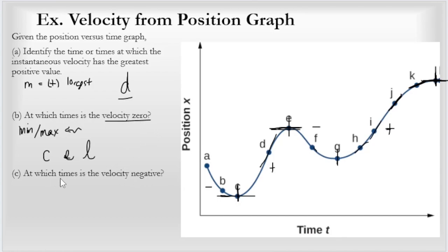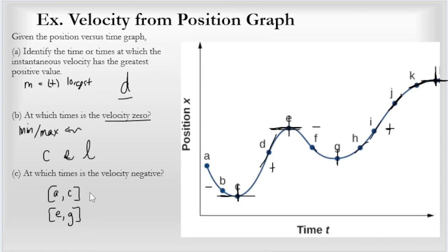At what times is the velocity negative? These will be intervals. The tangent line has a negative slope in the interval from A to C, and in the interval from E to G. Those two intervals are when the tangent line has a negative slope.